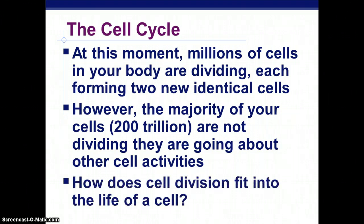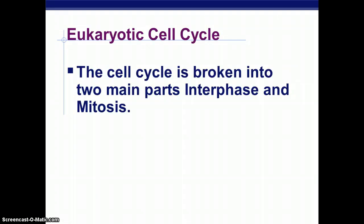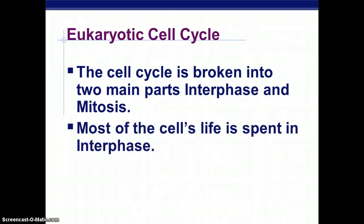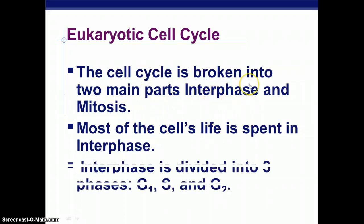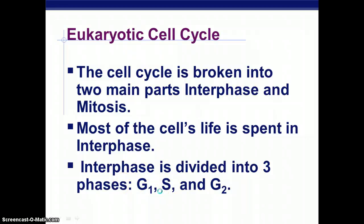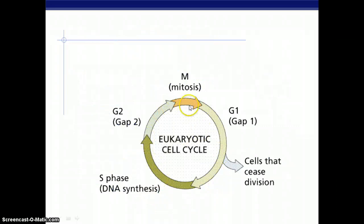But how does cell division actually fit into that life of a cell? If you look at a cell cycle, it is broken down into two main parts: interphase and mitosis. Most of the cell's life is spent in interphase. Only a small portion of the cycle deals with the actual cell division or mitosis.